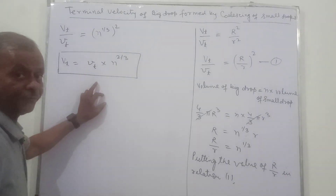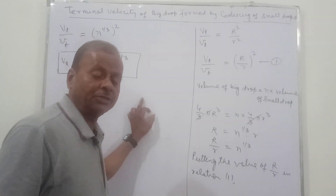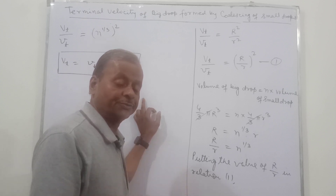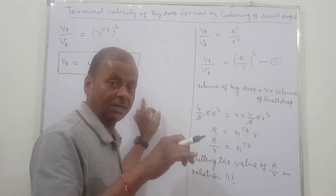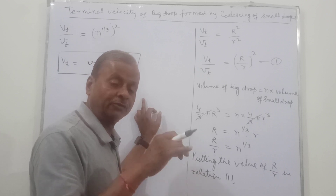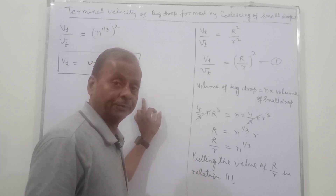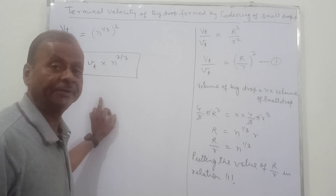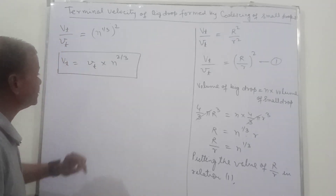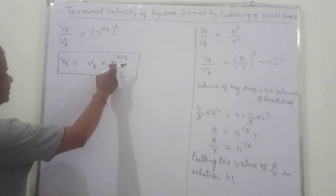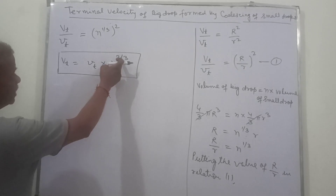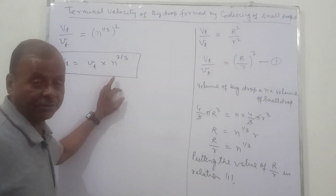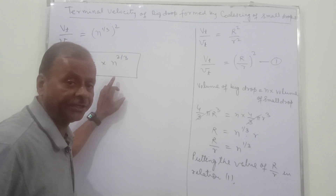So if we know the terminal velocity of the small drop, and N drops are being combined to form the big drop, then we can find the terminal velocity of the big drop. We can see here that the exponent is 2/3, so N should ideally be a perfect cube.